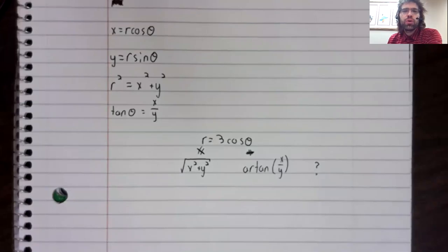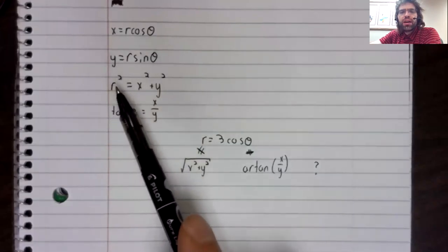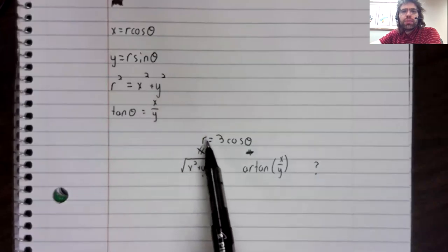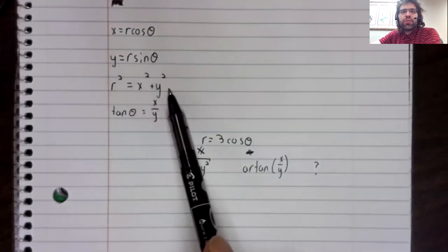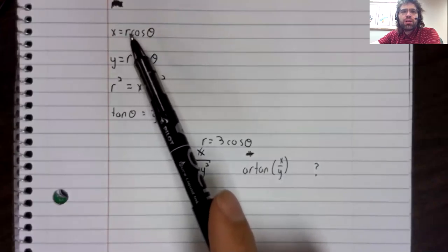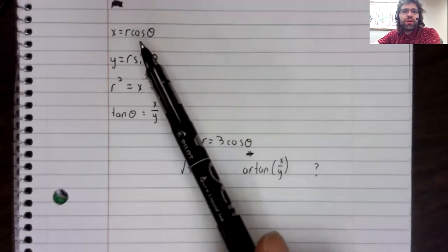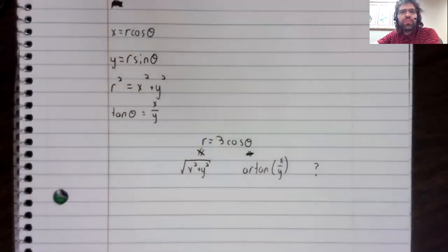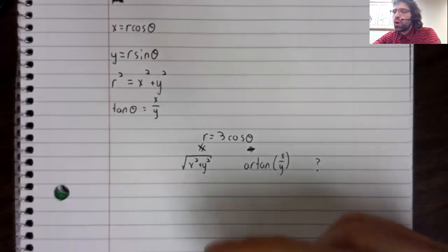How do we approach this problem? There is no golden rule, but let's think it through. If instead of having an r, we had an r squared, we could replace the left-hand side of this equality with something involving x's and y's. If instead of a cosine, we had r times the cosine, we could replace the right-hand side with something involving x's. So on both sides, it would be nice if we had an additional r.